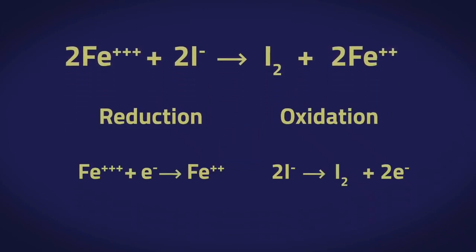Did you get it right? The iron is reduced and so gains an electron. The iodide ions are oxidized and so lose electrons to form iodine.